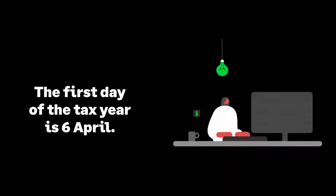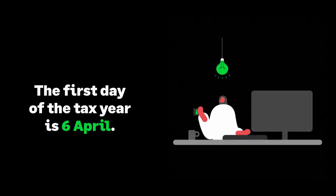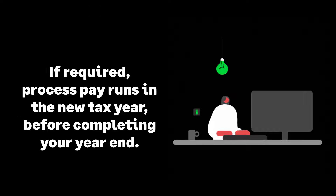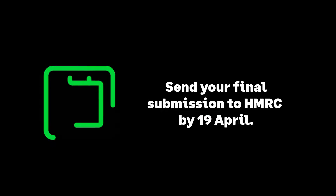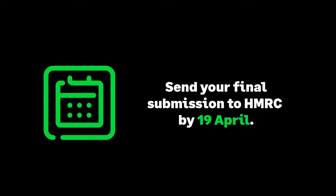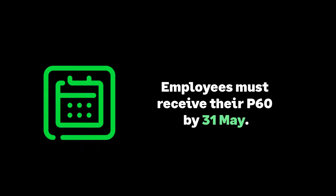Let's look at some important dates over payroll year-end. The 6th of April is the start of the new tax year — you can process pay runs in the new tax year even if you've not yet completed your year-end steps. The 19th of April is your deadline for the final submission of the tax year, which is the Employer Payment Summary within the year-end tab. The 31st of May is when your employees should have received their P60s.